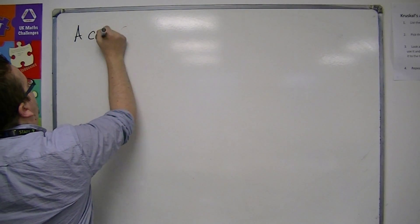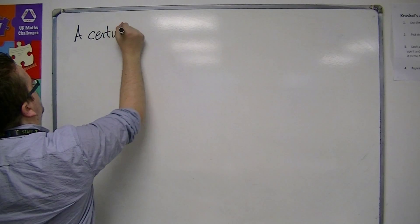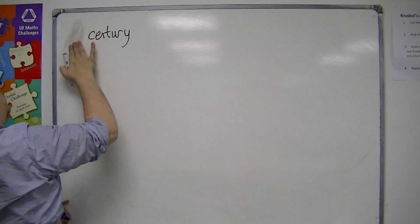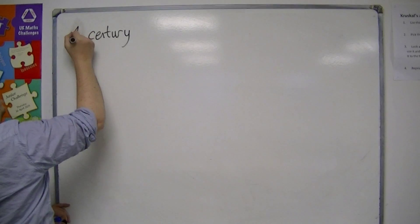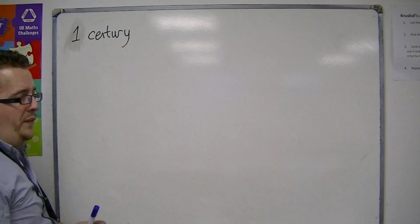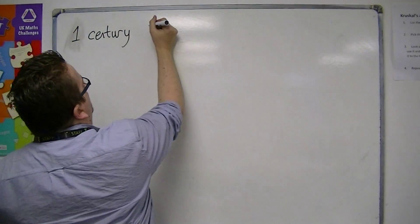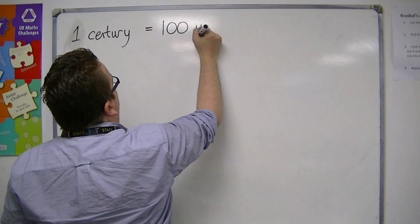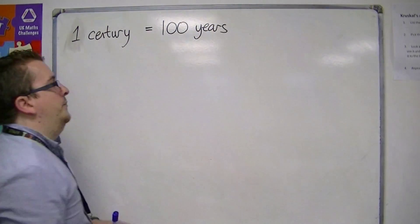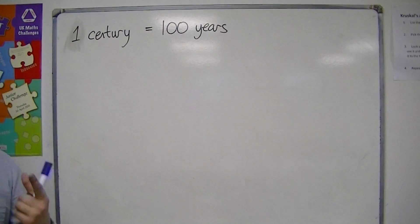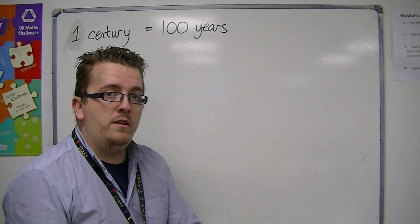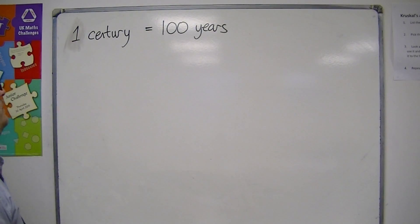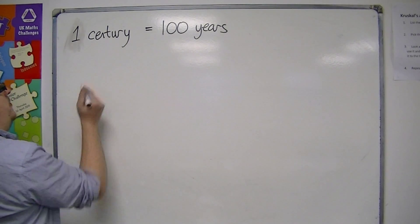So we have one century. One century is the same as a hundred years. Cent, centurion, percent — it's all to do with a hundred. So, a hundred years.